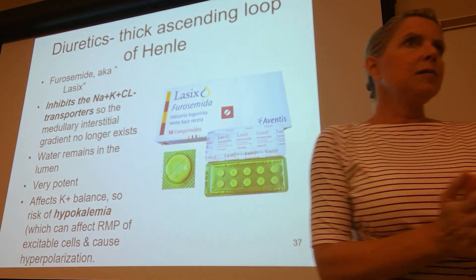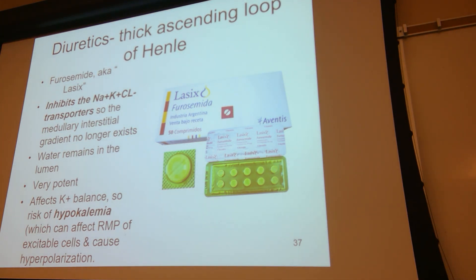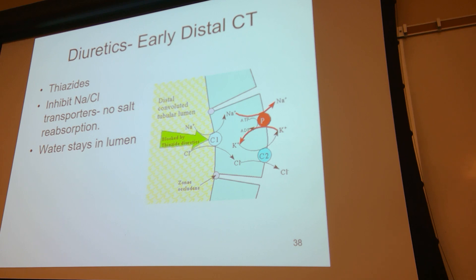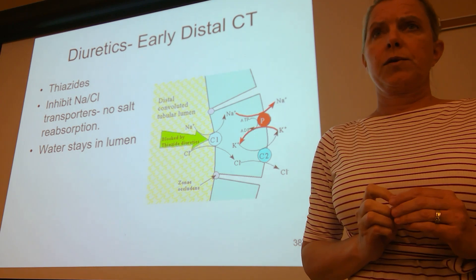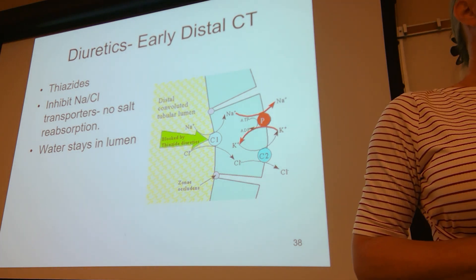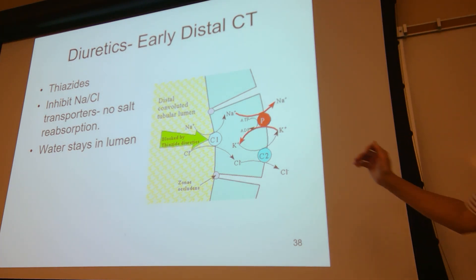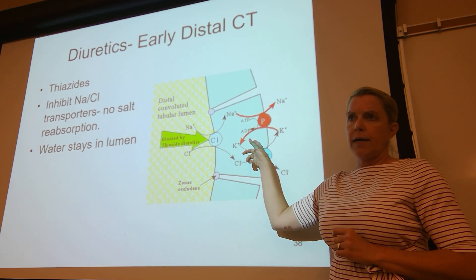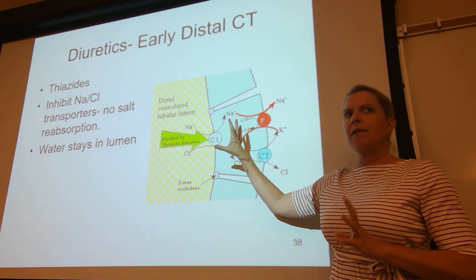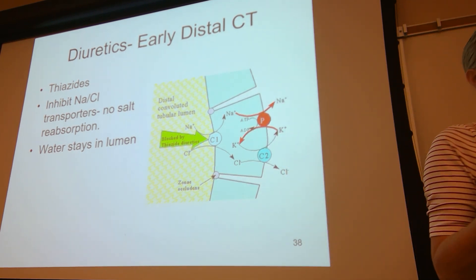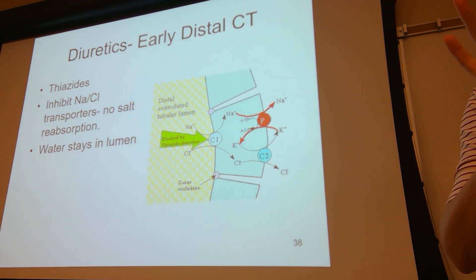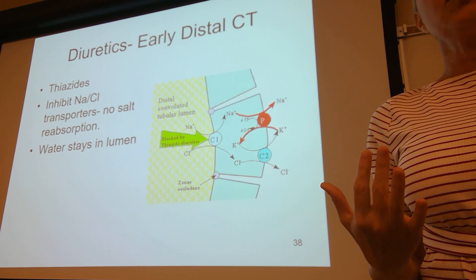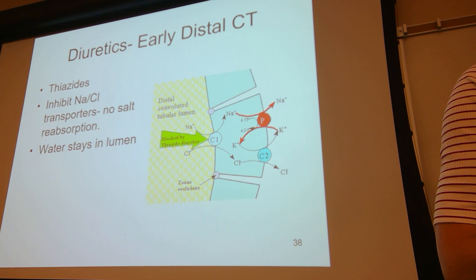Potassium imbalance can kill very quickly. In the early distal convoluted tubule, we have thiazide that works here. Thiazide blocks the sodium-chloride co-transporter on the apical side, meaning you can't reabsorb the sodium and chloride. At this area, about 5% of our original sodium filtered load is reabsorbed here. If we block that, the sodium chloride stays in the filtrate — and again, more solute requires more water to flush it out of your body.